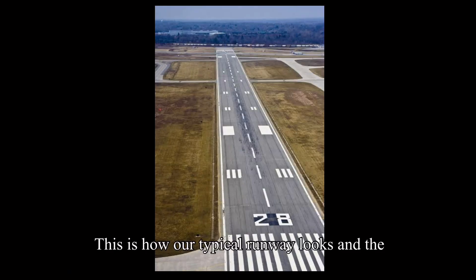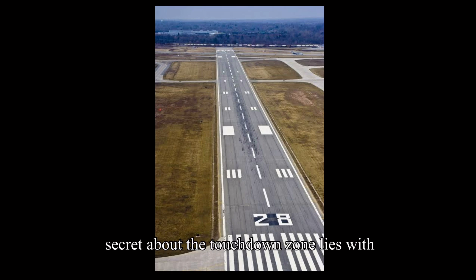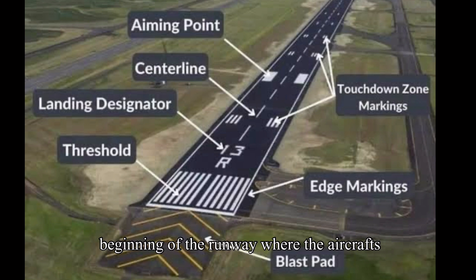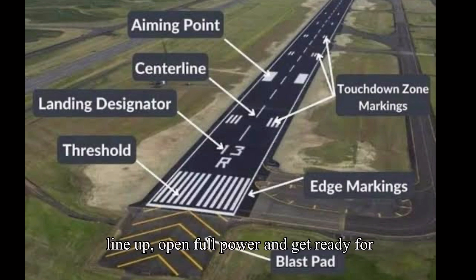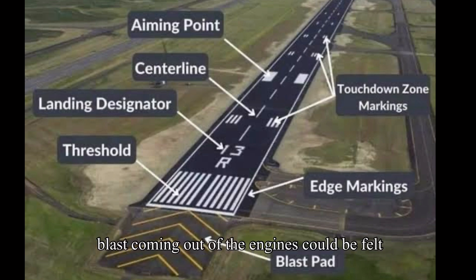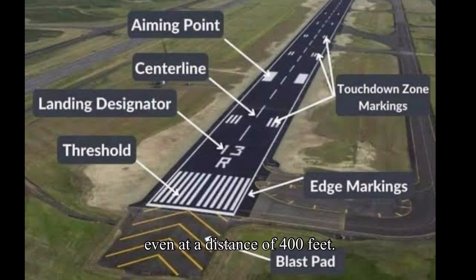This is how a typical runway looks, and the secret about the touchdown zone lies with those white markings on the runway. The blast pad is an area right behind the beginning of the runway where aircraft line up, open full power, and get ready for takeoff. This area must always be clear of men and material, as the intense effect of jet blast from the engines can be felt even at a distance of 400 feet.